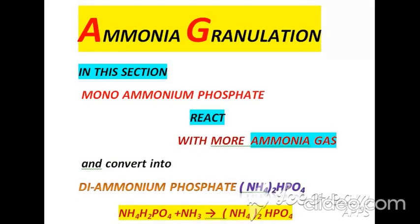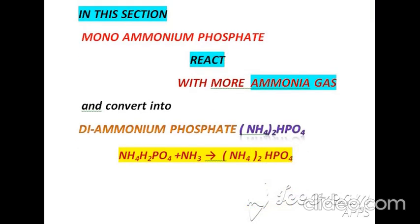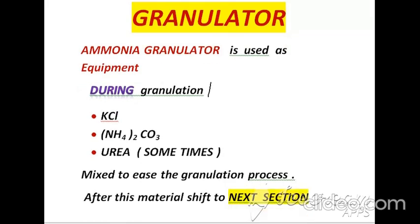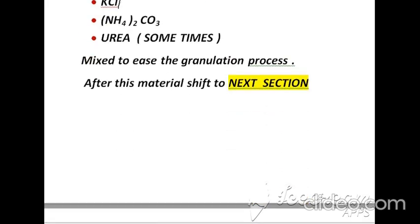After pre-neutralization, the material is sent to the next section: ammonia granulation. In this section, mono ammonium phosphate reacts with more ammonia and converts into diammonium phosphate, as shown in the chemical reaction. The equipment used for this purpose is called a granulator. During the granulation process, KCl and ammonium carbonate are used. Sometimes urea is also added to ease the granulation process, after which the granulated material is shifted to the next section — scrubbing.